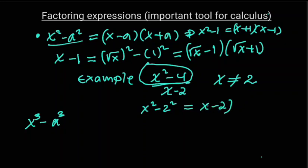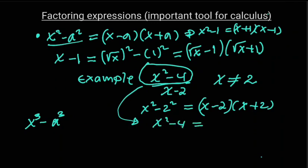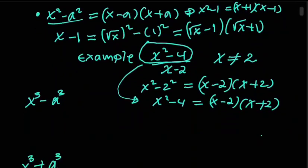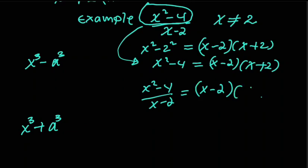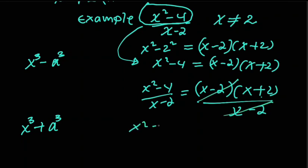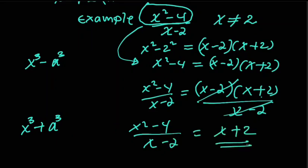x squared minus two squared factors as x minus two times x plus two. So x squared minus four equals x minus two times x plus two. Substituting this into the expression, x squared minus four over x minus two becomes x minus two times x plus two divided by x minus two. You can cancel x minus two, so the simplest form is x plus two.